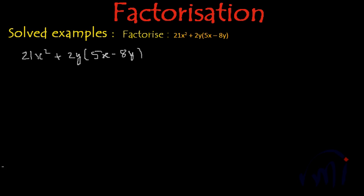So first let me open this bracket and multiply 2y inside the bracket. So the new expression we will have is 21x² + 10xy - 16y².